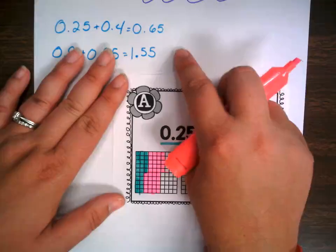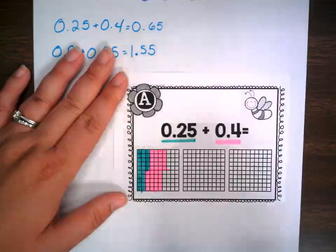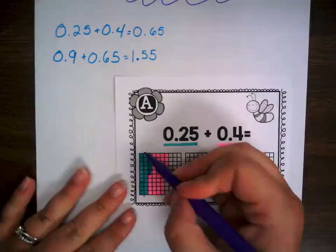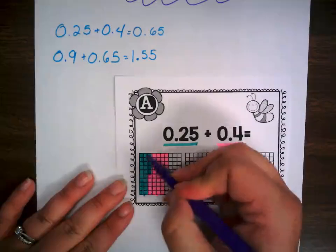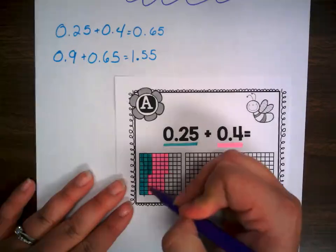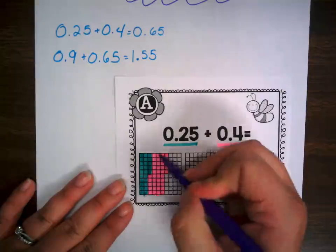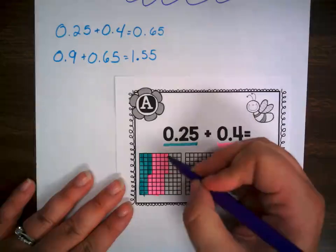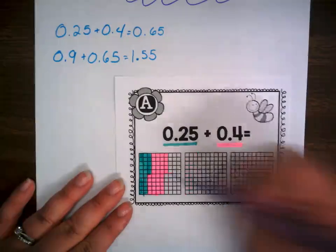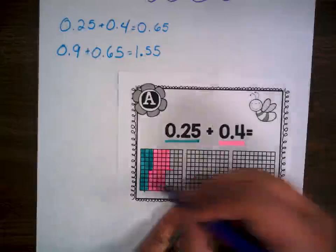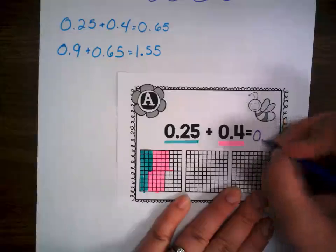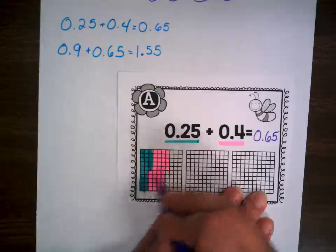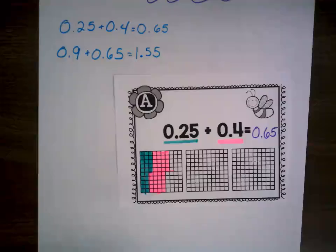Now when I count it all up together, I should have 65 hundredths. Let's take a look and see — I have one tenth, two tenths, three tenths, four tenths, five tenths, six tenths, and five hundredths. So we see that we have 0.65 — six tenths and five hundredths — when I add them together.